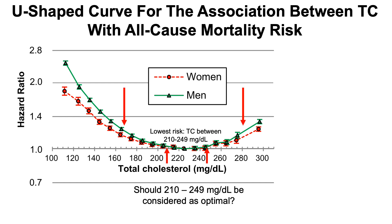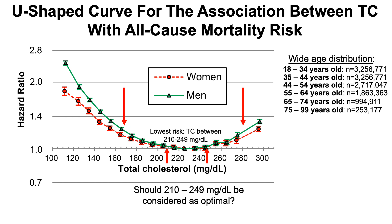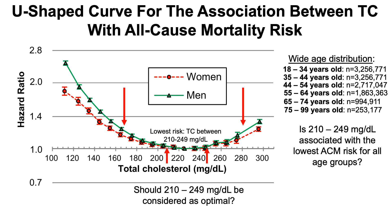Based on this data, should 210 to 249 be considered optimal? It's important to note that in this study there was a very wide age distribution including a large number of subjects. There are millions of subjects for every age group, with the exception of older ages above 65 — though even from 65 to 99, it's about 1.3 million subjects. So, is 210 to 249 associated with the lowest all-cause mortality risk for all age groups? Let's have a look at the data, starting from the oldest age groups and working backwards.